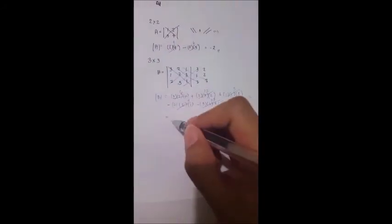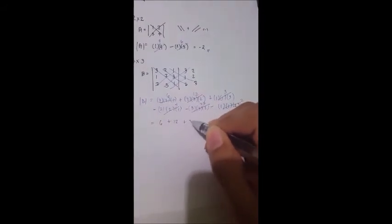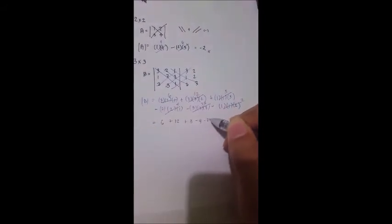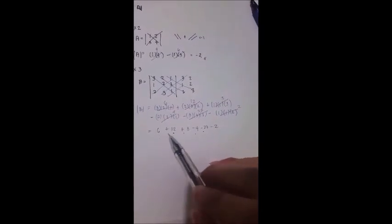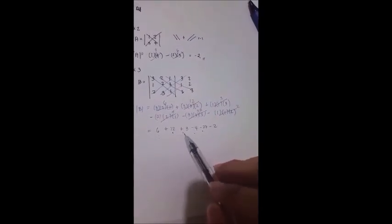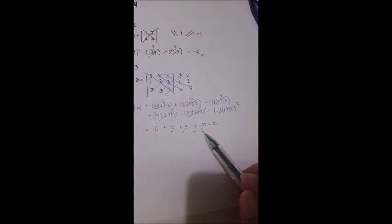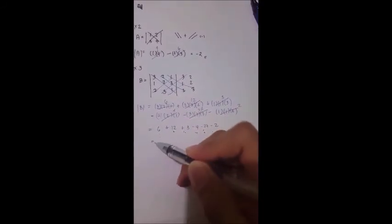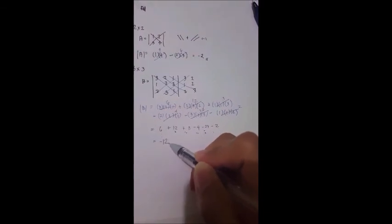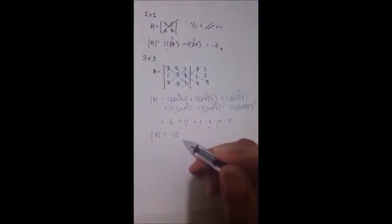So rewriting that, we now have 6 plus 12 plus 3 minus 4 minus 27 minus 2. We have 6 plus 12 is 18, plus 3 is 21, minus 4 is 17, minus 27, that is negative 10, minus 2, that becomes negative 12. So the determinant of our matrix is negative 12.